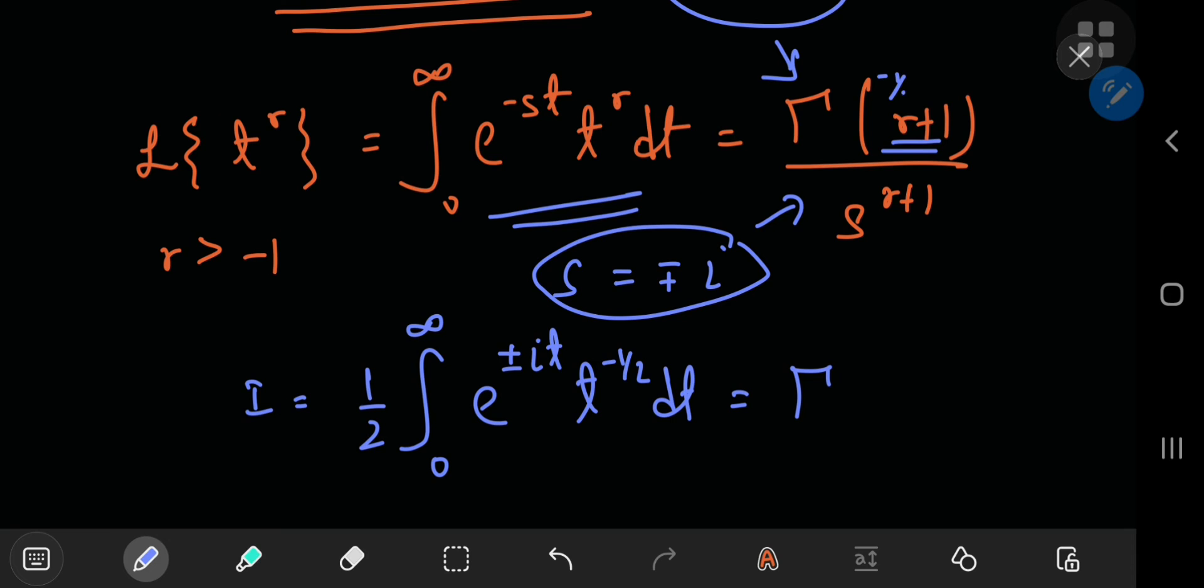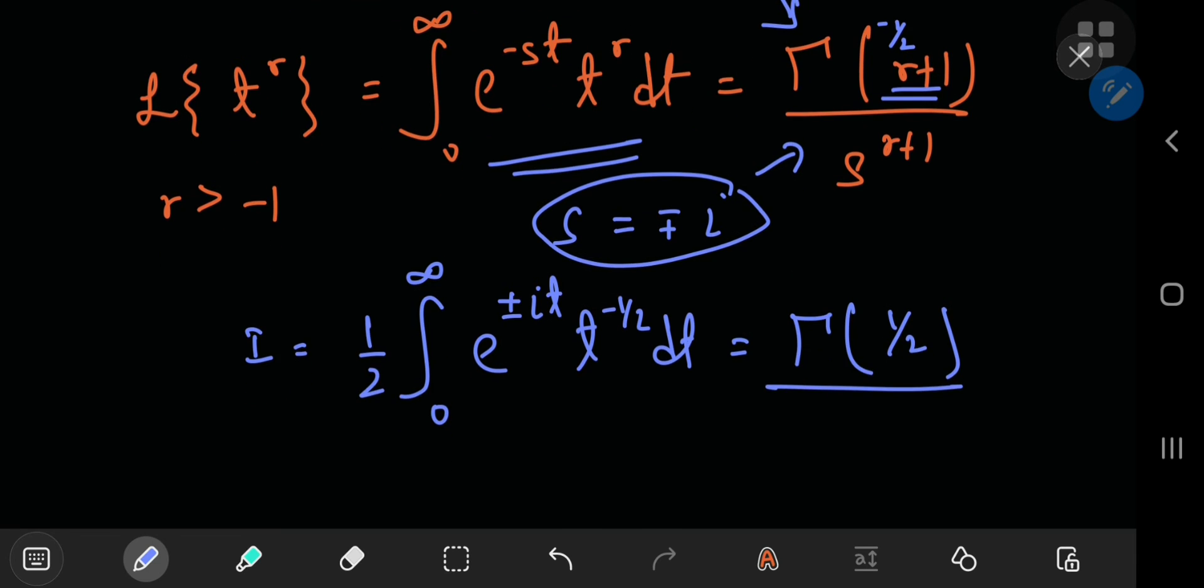t to the negative 1 half dt equals gamma r plus 1. Now, if r equals negative 1 by 2, then we have gamma 1 by 2 divided by minus plus i to the 1 by 2. And of course, this factor of 1 by 2 as well.